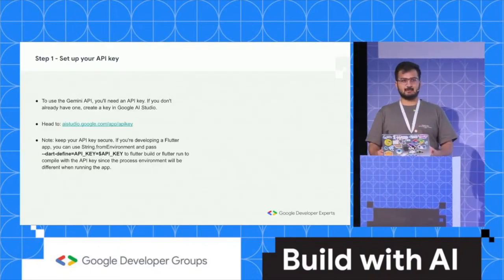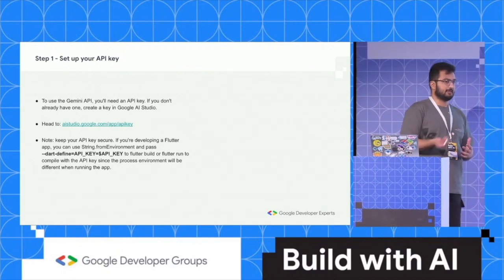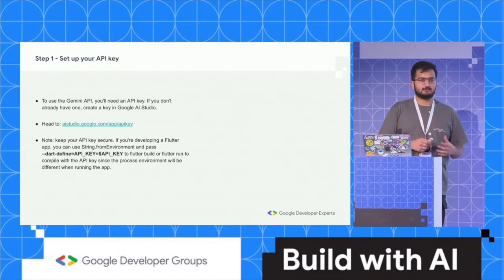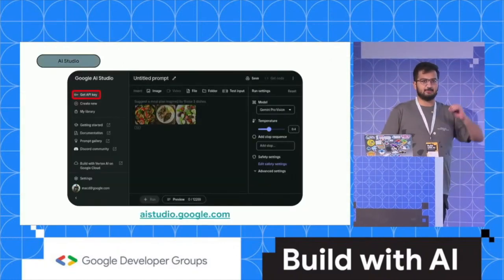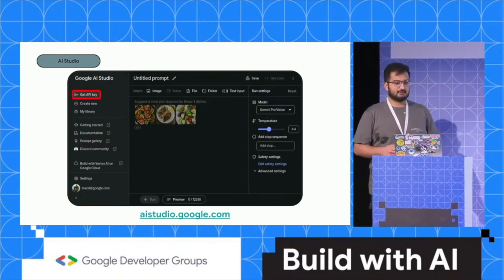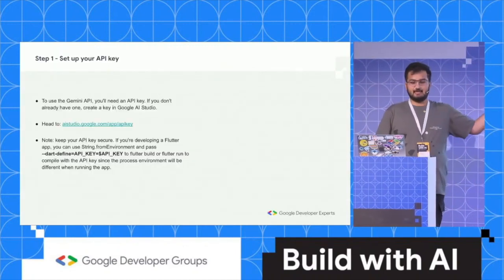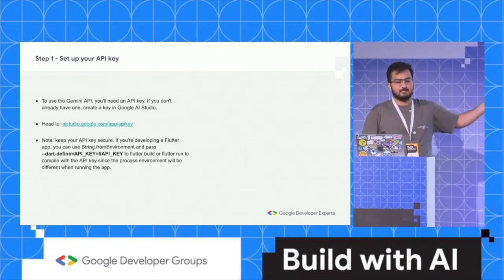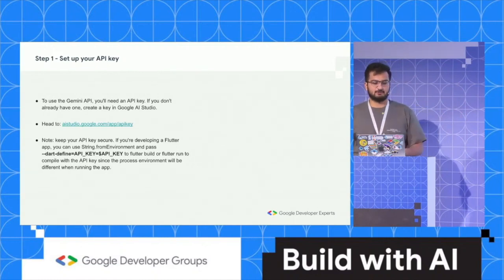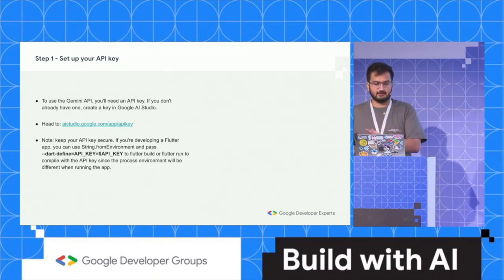The first step is to set up an API key. To interact with the Gemini API, you need an API key, which you can quickly get by going to aistudio.google.com. It's a very simple setup — you have an option to get an API key on the studio itself. Copy this API key and save it for now. But we want to be able to access this API key safely, so if you are building with Flutter, you have the option to pass in an API key using the --dart-define flag, defining the API key variable to a particular value.